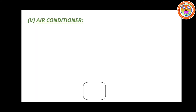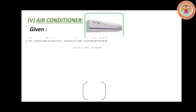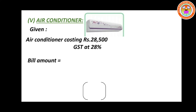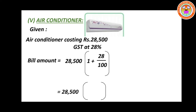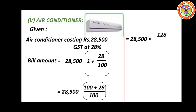Last subdivision: air conditioner. The air conditioner costing is Rs.28,500 and GST is 28%. Bill amount equals 28,500 into (1 plus 28 divided by 100), that is 28,500 into 128 divided by 100. Cancel two zeros with two zeros. Multiply 285 into 128. The final answer is Rs.36,480.